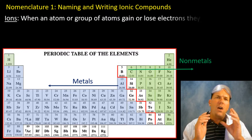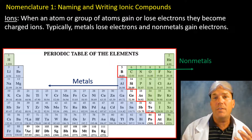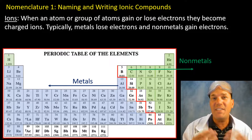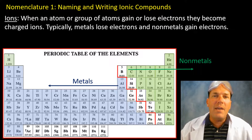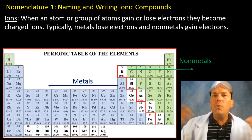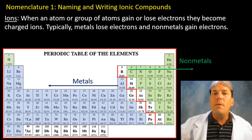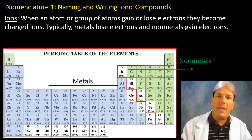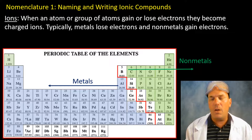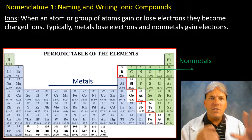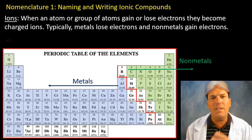Ions are when atoms or groups of atoms gain or lose electrons. Electrons are those negatively charged subatomic particles. So if an atom loses or gives away electrons, it becomes positively charged, whereas an atom that is gaining electrons becomes negatively charged. Metals assume a positive charge, while non-metals assume a negative charge.